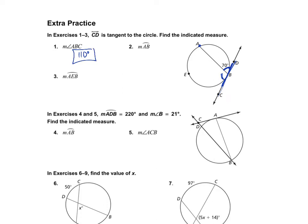For number 2, we find the measure of arc AB. If the angle is 70°, the arc is double that — remember, the angle is half the intercepted arc — so the arc will be 140 degrees.